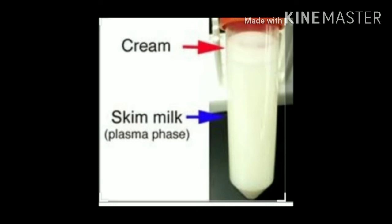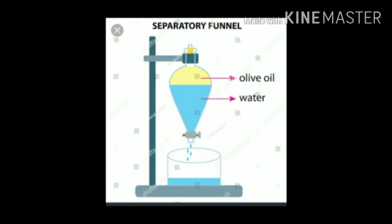Applications of centrifugation: It is used in dairies to separate butter from cream — the butter being lighter floats at the top. It is used in washing machines to squeeze out water from wet clothes. It is used in diagnostic laboratories for different blood and urine tests. It is used in chemical laboratories and industries for separating suspended materials from liquids.